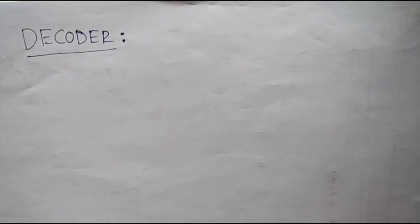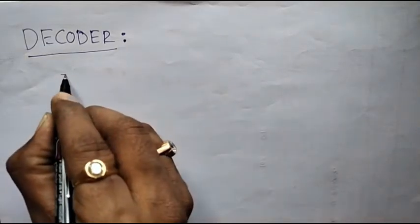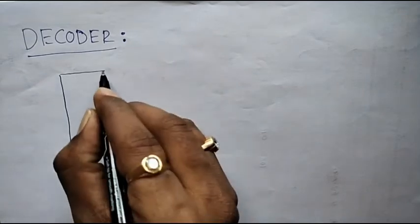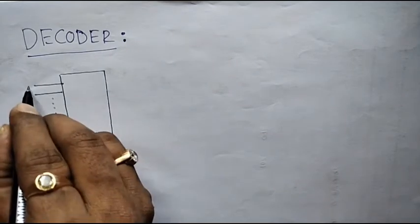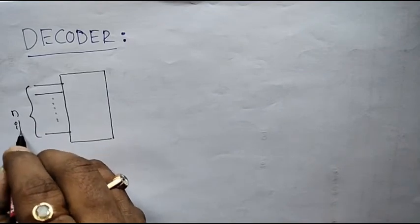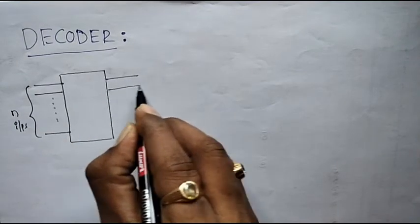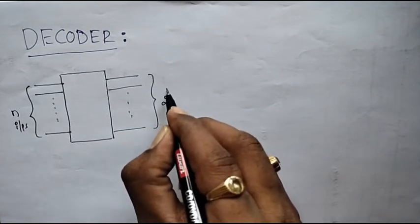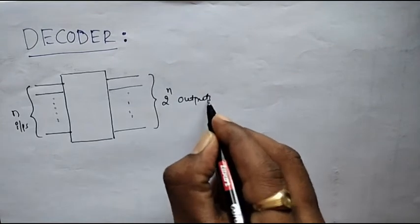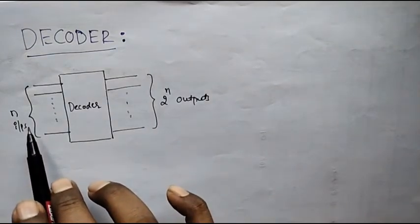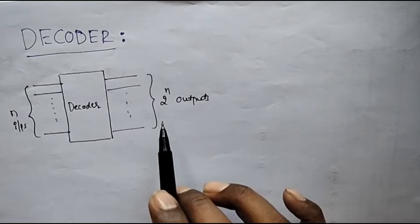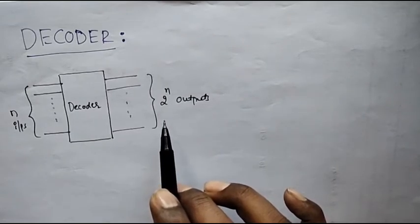In this lecture we will study about decoder. Decoder is a combinational circuit which has multiple inputs and multiple outputs. In general, it will have n number of inputs and 2 raised to n outputs. Thus, a decoder converts n binary inputs into 2 raised to n binary outputs, converting a coded input into coded outputs.